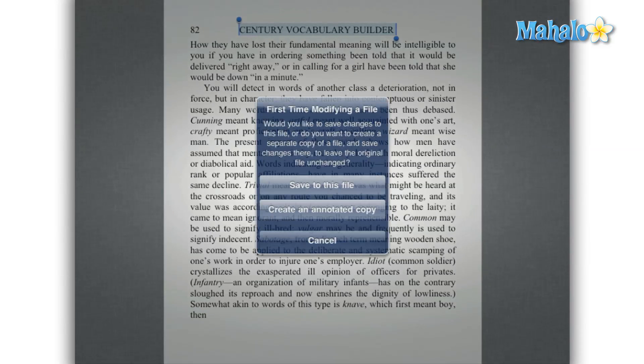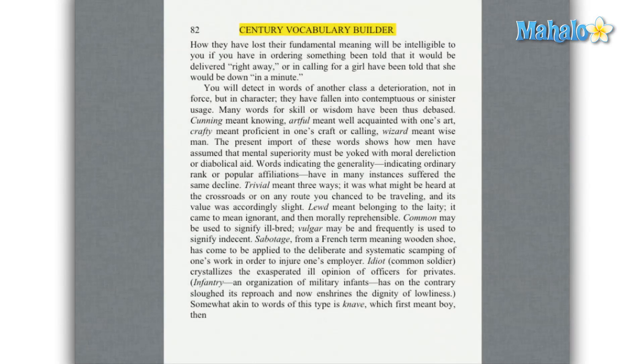Now a box will show up asking if you'd like to edit this PDF or make a copy. For this how-to, we'll just make a copy to edit. And that is how you highlight an item.